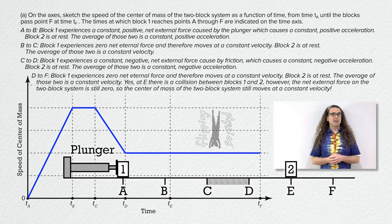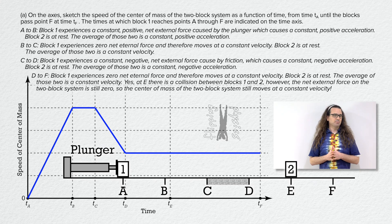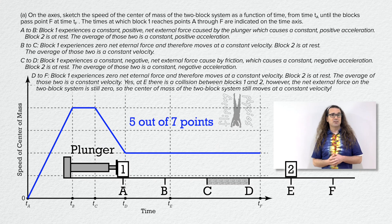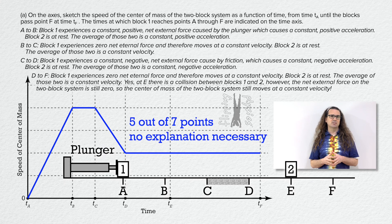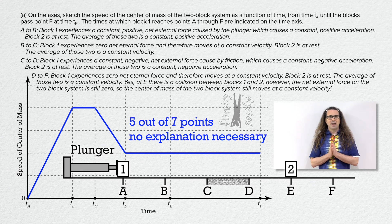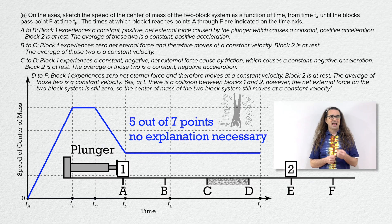Now that we have the correct graph, I have a bit to say about grading. Part A is worth 5 out of 7 points for this problem. That is right, drawing lines correctly on this graph is worth 5 out of 7 points. No explanation necessary. Please, draw graphs carefully. And do not write out your explanation if you are not asked to.